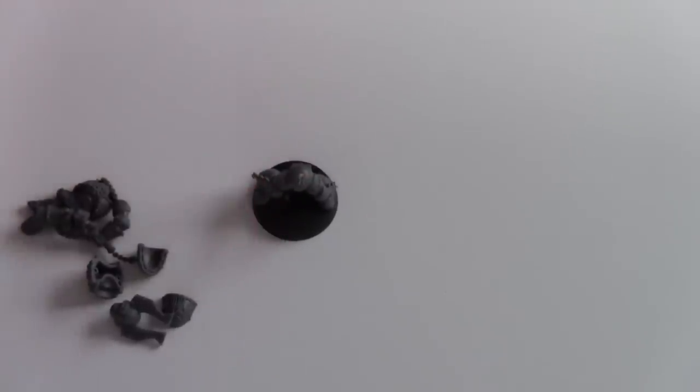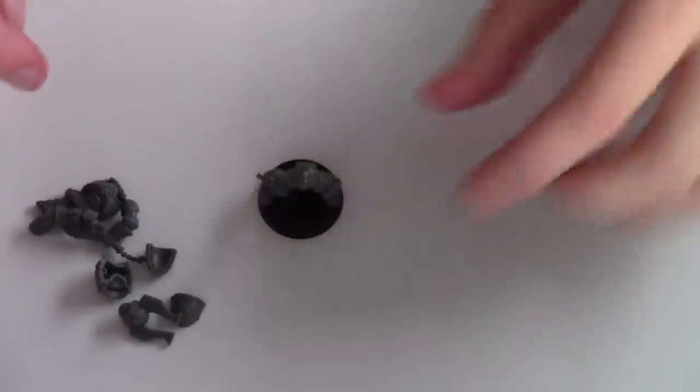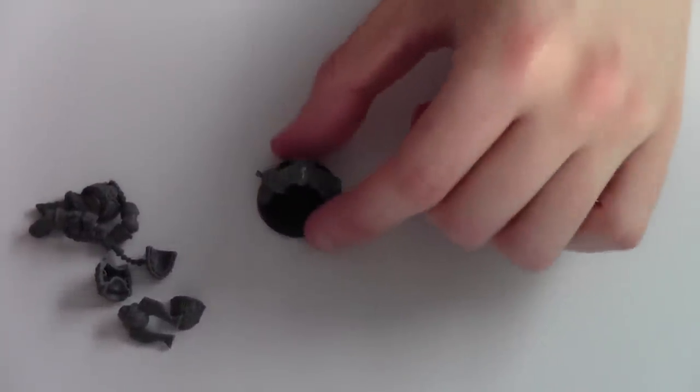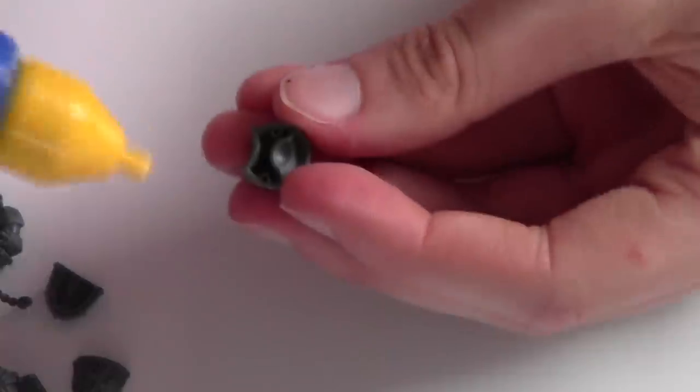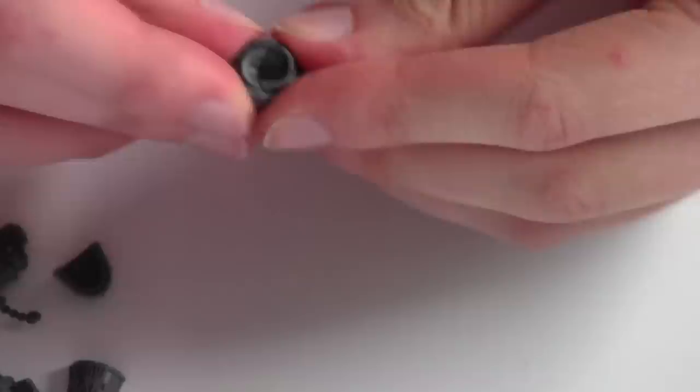So it should only take about five minutes for this to get a temporary setting, so it should be pretty much stuck within five minutes, but it won't be completely set. So what I do is I let this set onto the base whilst assembling the rest of the model, and then the rest of the model can just get stuck on top. So I'll just do that now and we'll speed it up so it's not too boring.